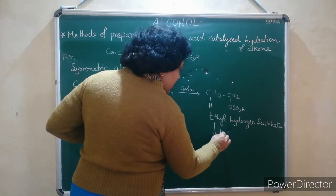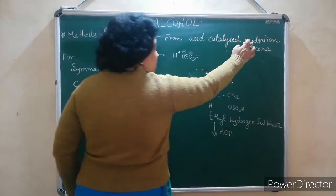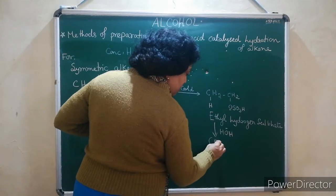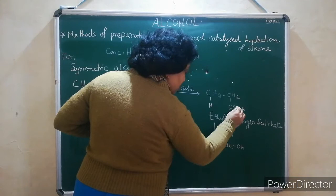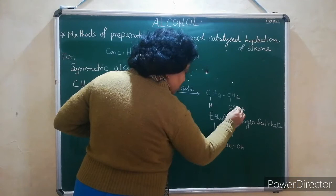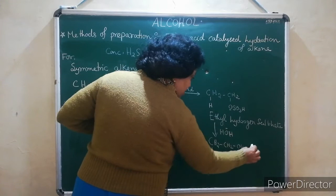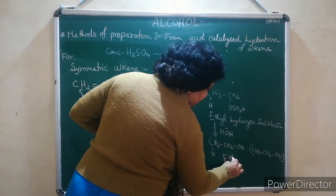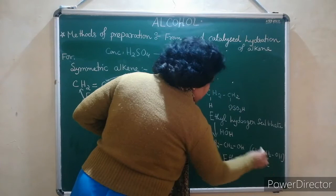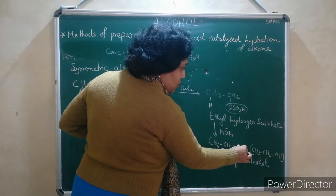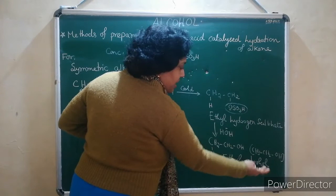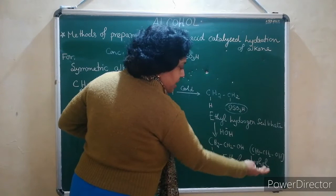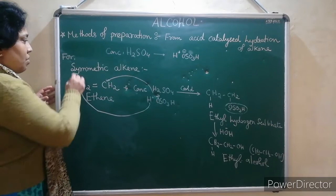The next step is treatment with water because it is hydration. Water is also a nucleophile. Exchange will take place — the hydrogen sulfate group is exchanged with OH. So we get CH3-CH2-OH, which is ethyl alcohol. This is the product from a symmetric alkyne.